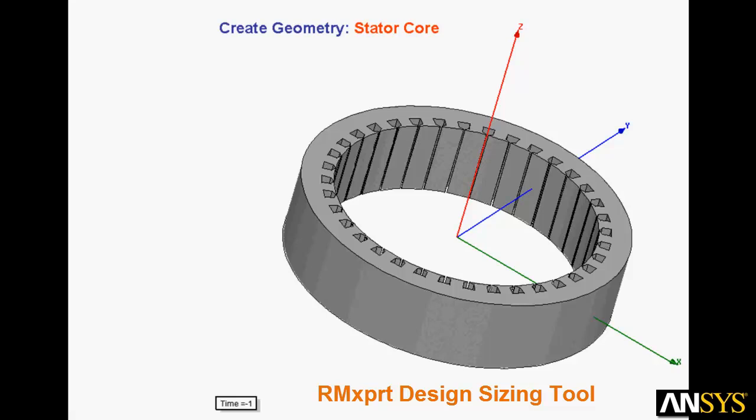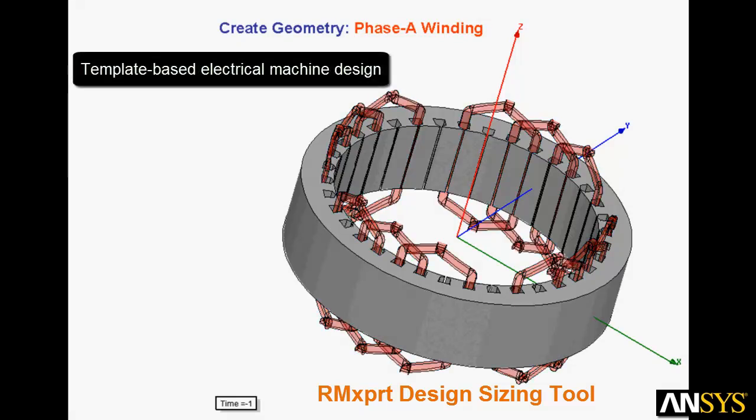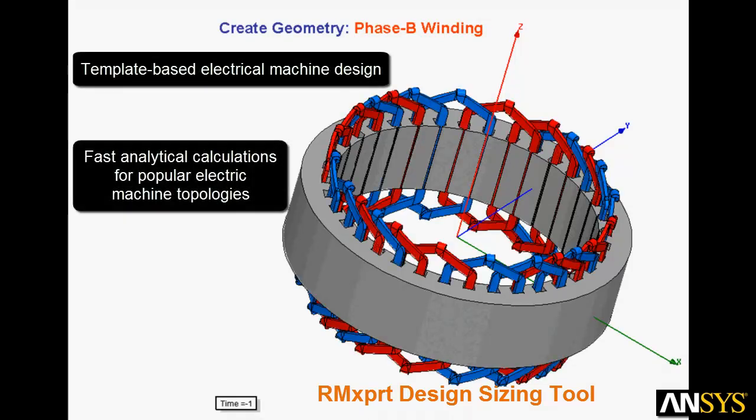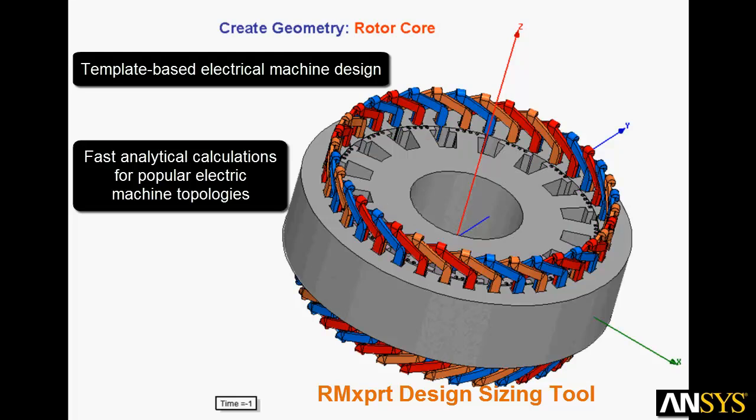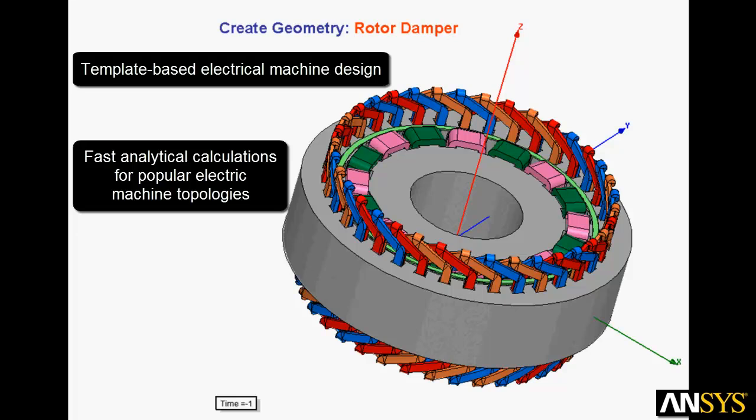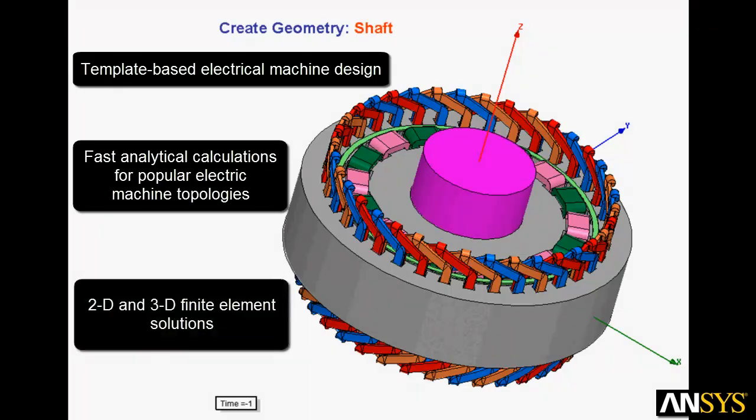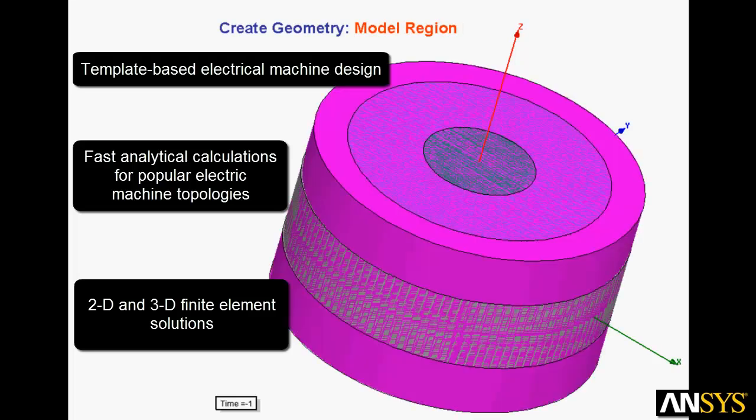The first step in the flow is to apply the ANSYS RMXpert design sizing tool. RMXpert is a template-based electrical machine design tool that provides fast analytical calculations of machine performance to allow engineers to zero in on an appropriate design. You can select from many motor types and create custom designs to your specifications quickly. It then creates ready-to-solve 2D and 3D models for detailed transient finite element calculations in ANSYS Maxwell.